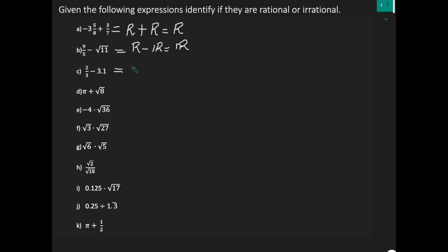Let's look at C. I have two-thirds, which is a rational number. I'm taking away 3.1. 3.1 is a decimal — it is a terminating decimal, so a terminating decimal is a rational number. And a rational taken away from a rational will give you a rational number.